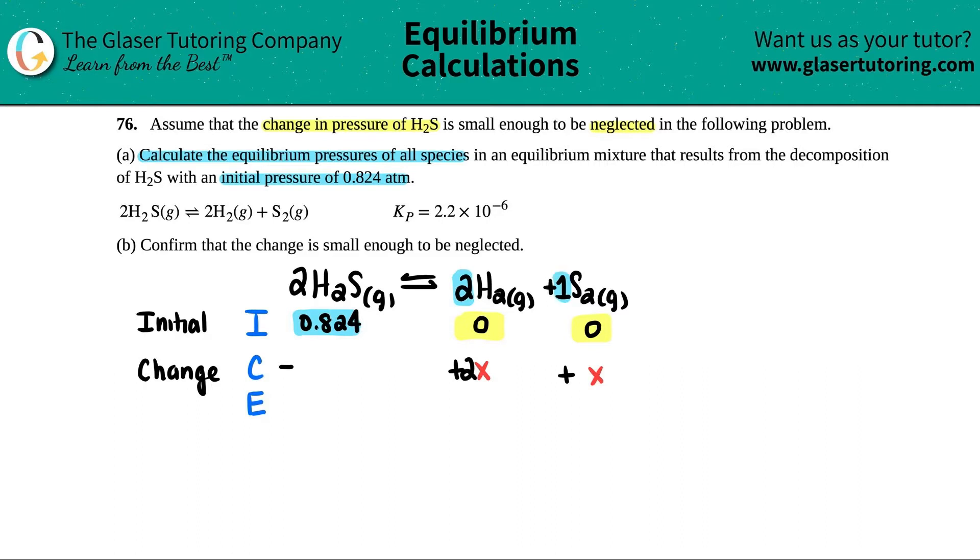This was only 1. So you could say plus 1X, but that's the same thing as saying plus X. And now here, this would be minus an X value, right? But you got to look at that coefficient. There's a 2 here. So this would be minus 2X.